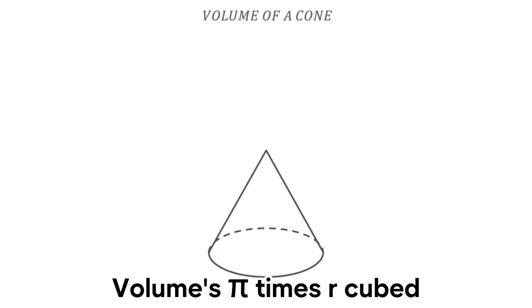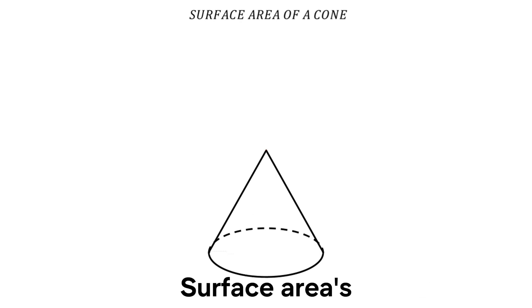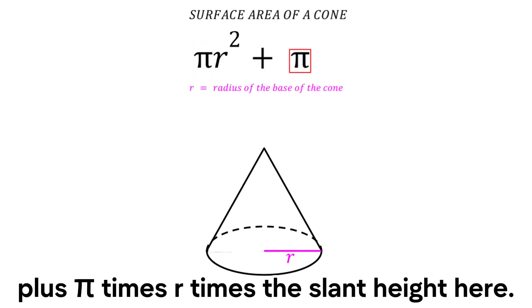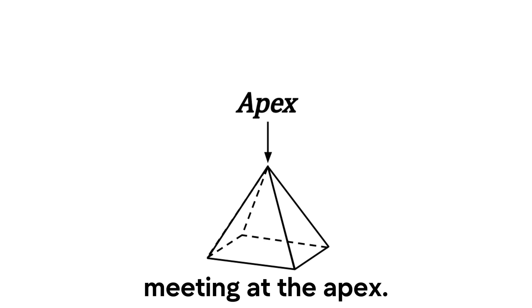Cones, the next volume: pi times r cubed times the cone size all over three, if you ain't aware. Surface area's pi times r squared plus pi times r times line height here, perimeterized with the triangular sides meeting at the end.